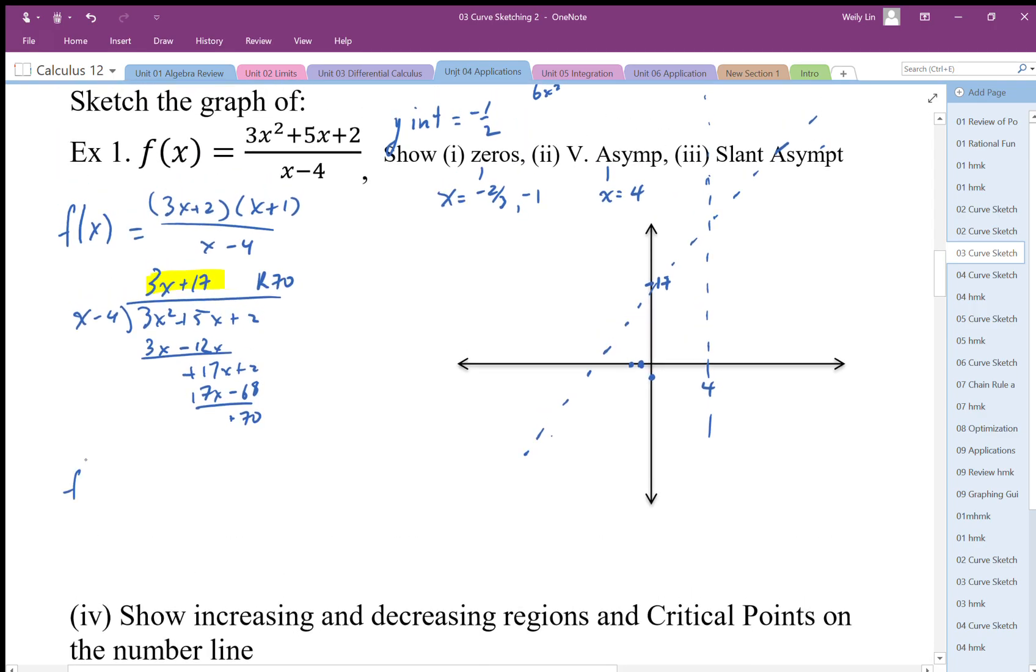But let's differentiate this to find the first derivative. So the first derivative: I'm going to differentiate the numerator and multiply it with the denominator, minus the numerator times the derivative of the denominator, which is 1. Simplifying this, I need to expand. So I'm going to get 6x squared minus 24x plus 5x minus 20 minus 3x squared minus 5x minus 2.